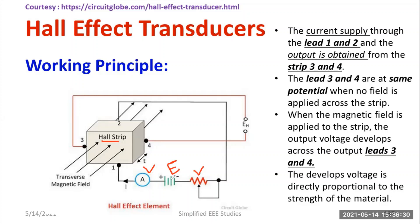When I provide the battery, there will be a continuous current starting from terminal 1 to 2, passing through the Hall strip and returning to the negative end of the battery side. So there is a continuous current which we have provided.